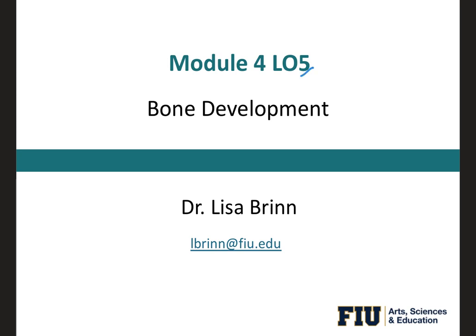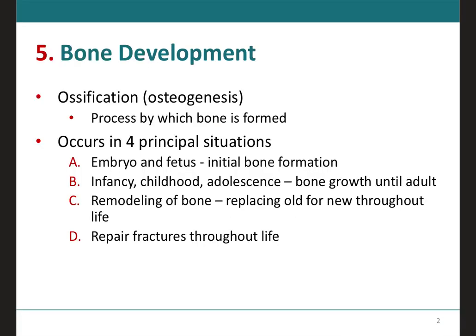For learning outcome number five, module four, we're going to be talking about bone development. Remember when we learned about calcification, where calcification is the process of deposition, crystallization, and the eventual hardening of mineral salts in a framework formed by collagen fibers of the extracellular matrix. Now we will be learning about ossification, which is a process by which bone is formed. It can also be called osteogenesis, where osteo means bone and genesis means formation or development — therefore, the formation of new bone.